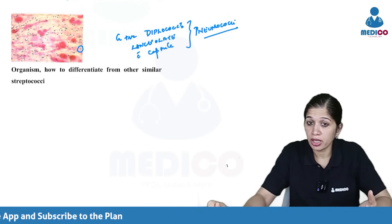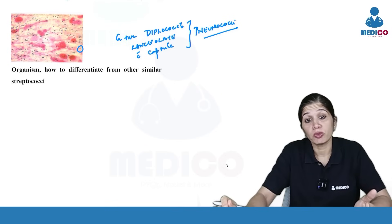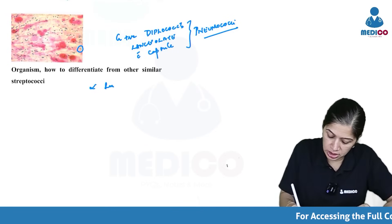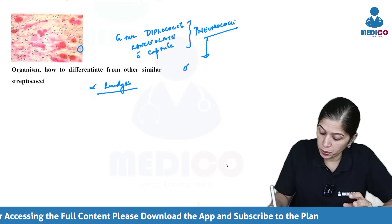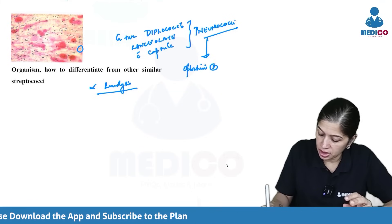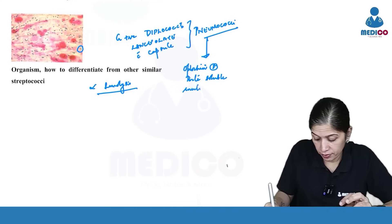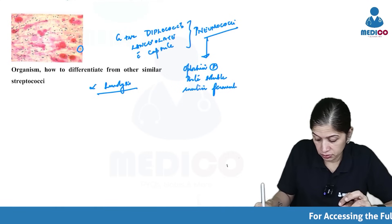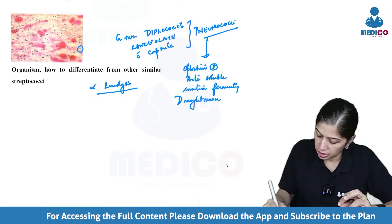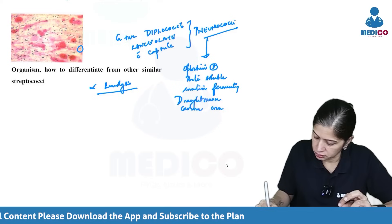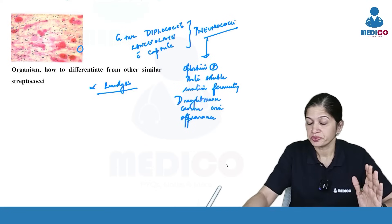Pneumococci can cause pneumonia, meningitis, and many different kinds of manifestations. It produces alpha hemolysis. The classical features are: optochin sensitive, bile soluble, inulin fermenting, and shows draughtsman or coin appearance. These are the classical features you will see with respect to pneumococci.